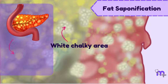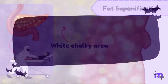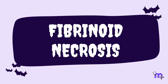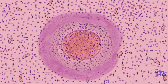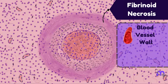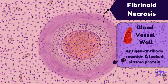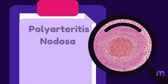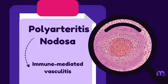Last but not least is fibrinoid necrosis. As the name suggests, the appearance of the necrosis is amorphous and pink in H&E sections and looks like fibrin. This kind of necrosis is seen in blood vessel walls as a result of antigen-antibody reactions and leaked plasma proteins. It is seen in polyarteritis nodosa, a form of immune-mediated vasculitis.